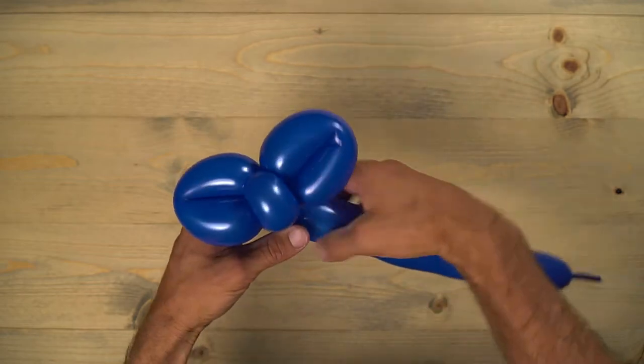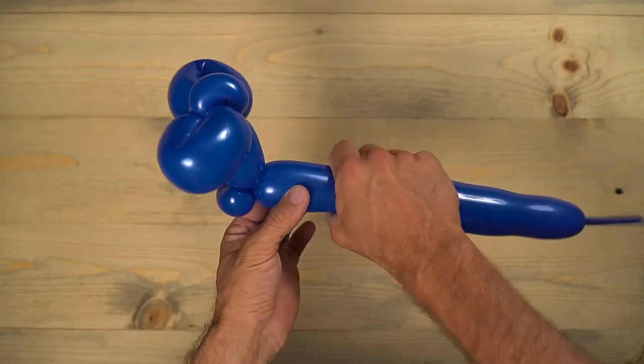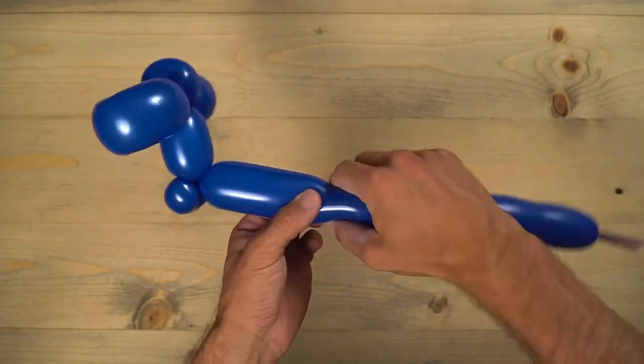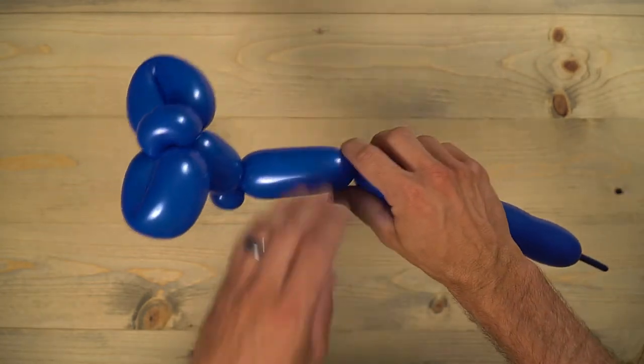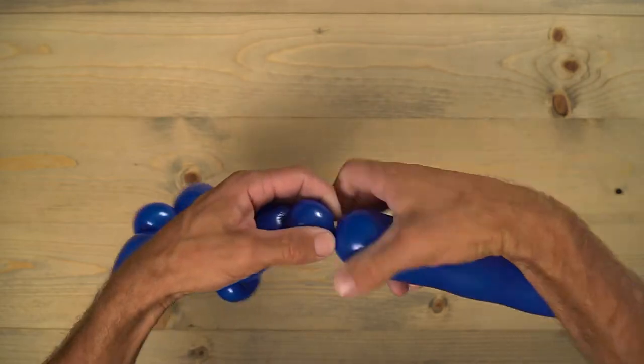That's the base of our tail there. And we'll move up toward the front of the airplane. Twist right there. And then do a one-inch bubble. Pinch twist that.